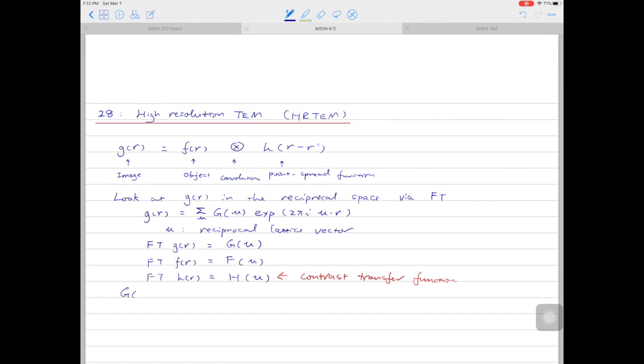So capital G(u) is equal to capital F(u) multiplied by capital H(u). Look at what we had in the real space and compare that to what we had in the reciprocal space. We can tell that the convolution in real space gives multiplication in reciprocal space.